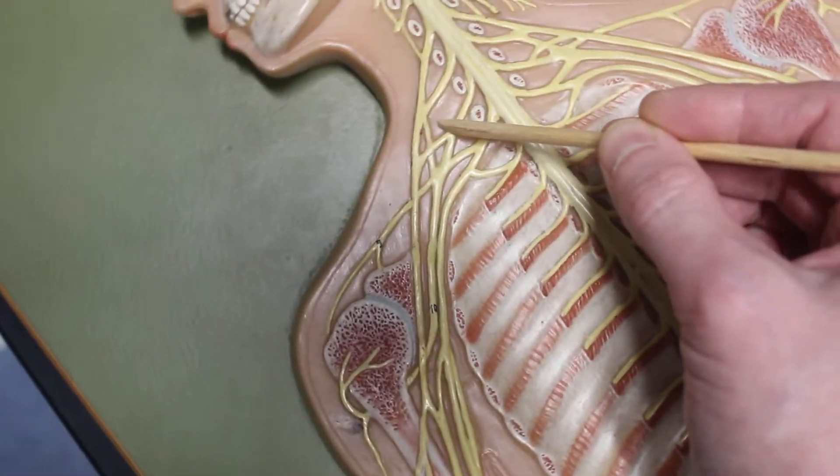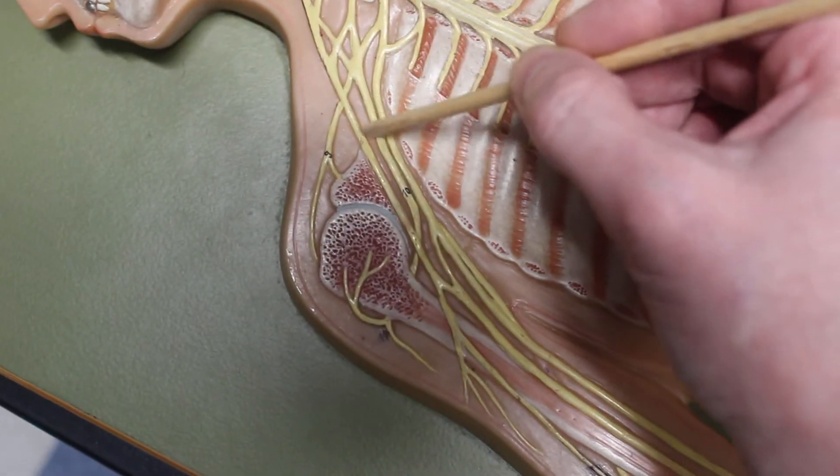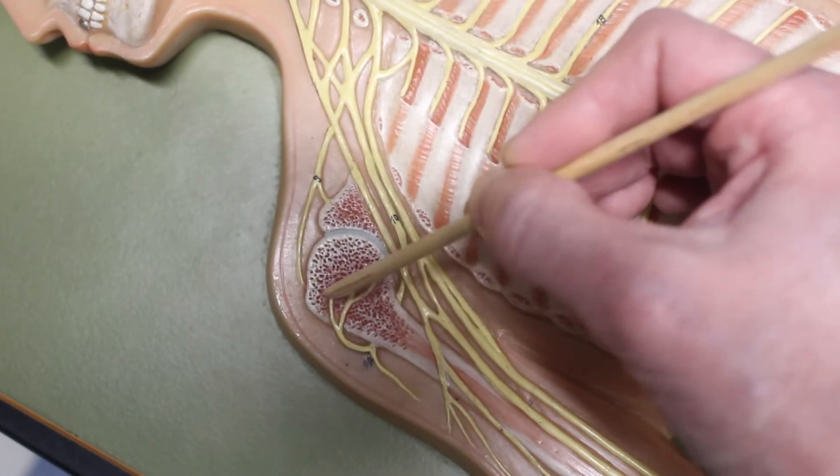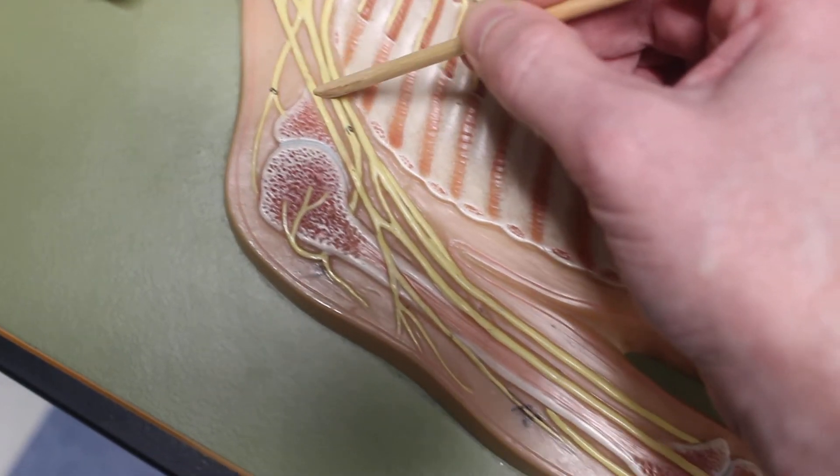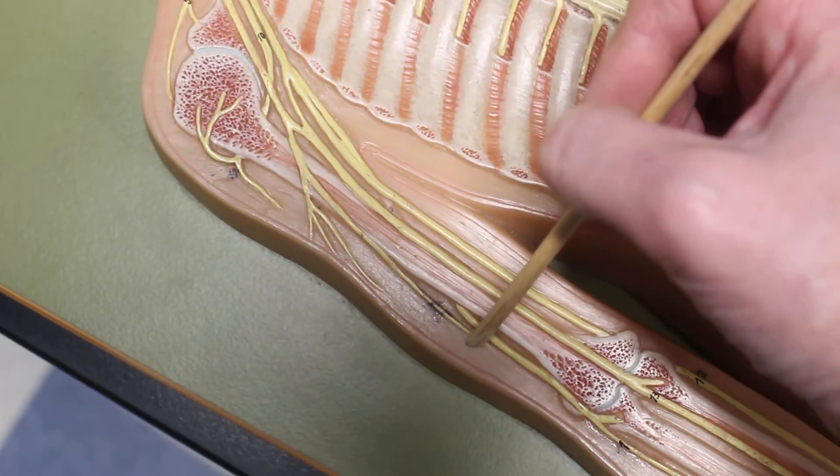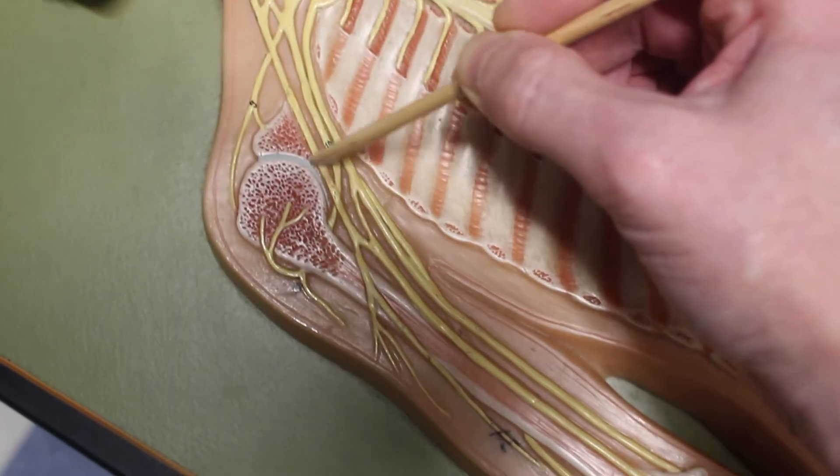These lead to the nerves going to the arm. So we have the axillary nerve wrapping around, that's the axillary nerve. We have the musculocutaneous nerve, so this is the musculocutaneous nerve.